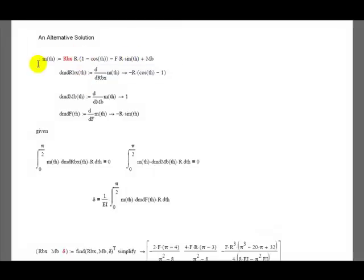Then we're going to take the derivative of the moment equation with respect to RBX. We get the one minus cosine theta term. Derivative with respect to the moment, we get a one. And then the derivative with respect to the applied load F, we're going to get a minus R sine of theta, minus R sine of theta from right here.